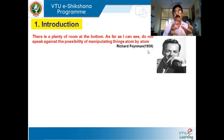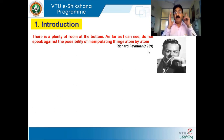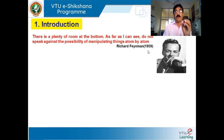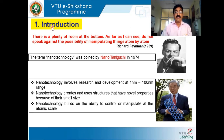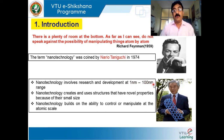Atom is nothing but nano size. Nano means 10 to the power minus 9. So way back in 1959, Richard Feynman gave a clue about nanotechnology. And in 1974, Norio Taniguchi coined the name nanotechnology. Nanotechnology involves research and development at the nano level. Nano means 1 into 10 to the power of minus 9 meter — anywhere up to 100 nanometers can be considered as the nano range.